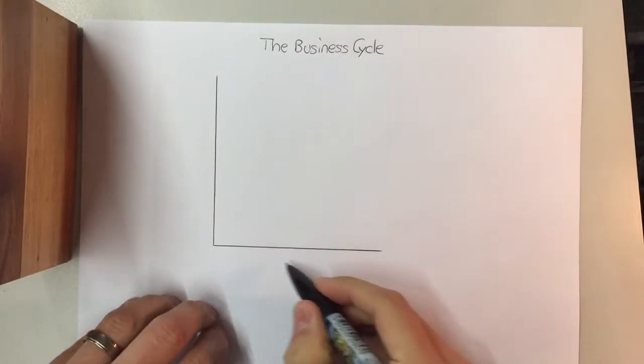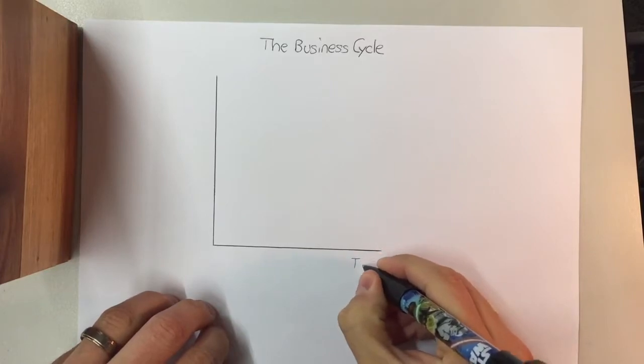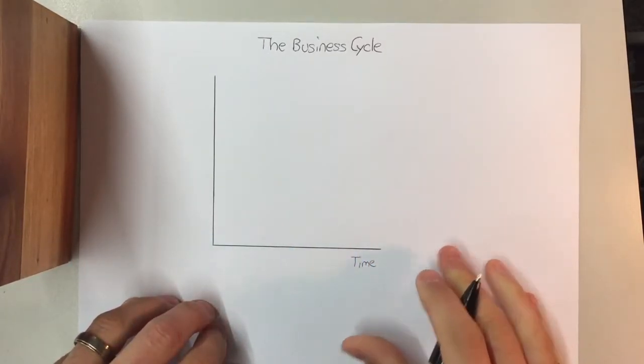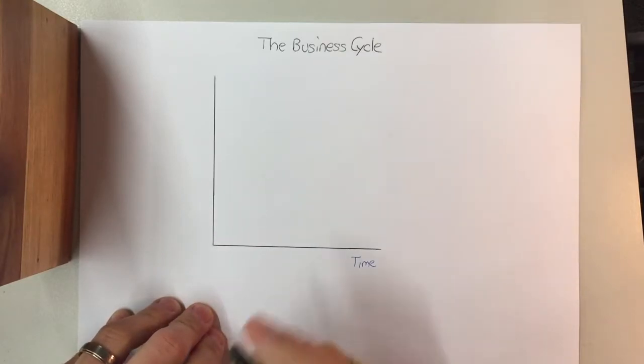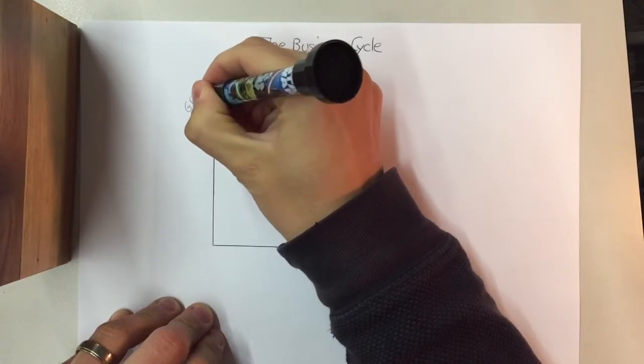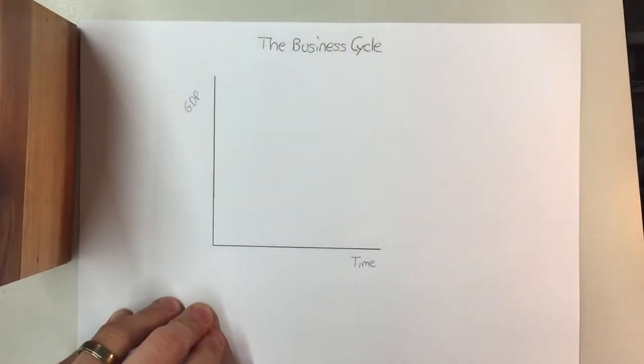With the business cycle, we label this side as time. So this is the time that transpires over a series of years or months. And then on this side, we record our GDP, or our Rate of Economic Growth.